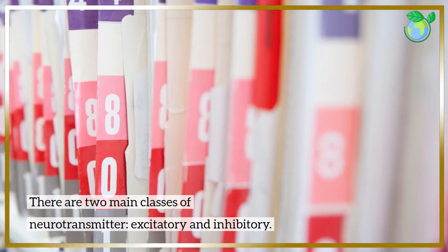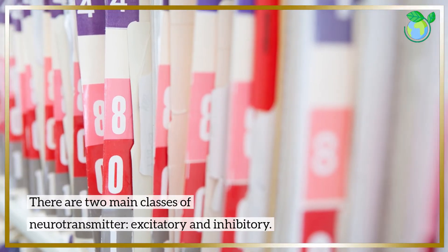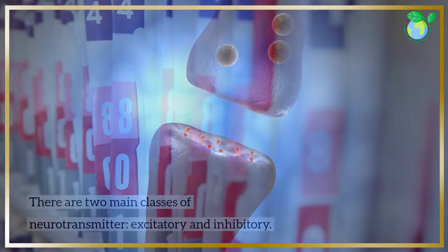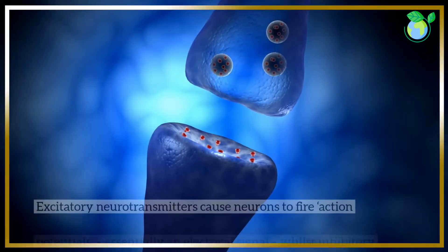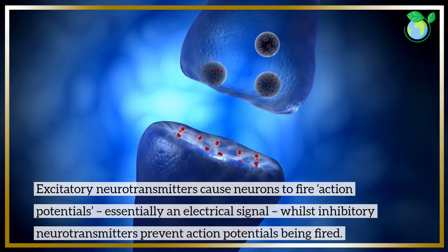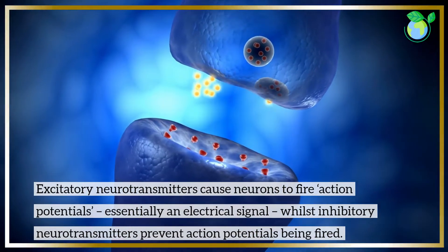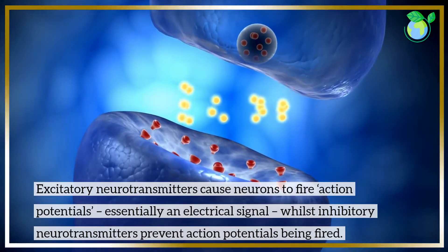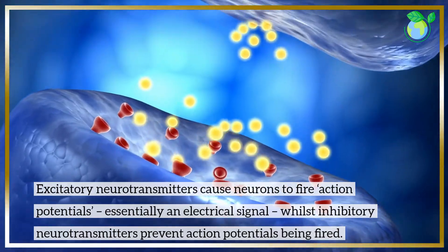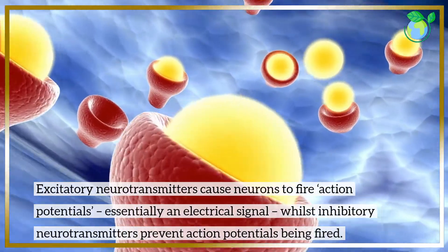There are two main classes of neurotransmitter: excitatory and inhibitory. Excitatory neurotransmitters cause neurons to fire action potentials — essentially an electrical signal — whilst inhibitory neurotransmitters prevent action potentials from being fired.